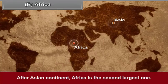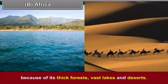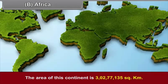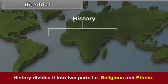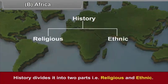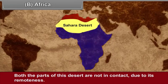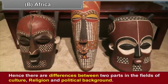Africa is the second largest continent. The African continent was known as the unknown continent during the 18th century because of its thick forests, vast lakes and deserts. The area of this continent is 3,277,135 square kilometers. History divides it into two parts — religious and ethnic — due to the Sahara Desert. Both parts are not in contact due to its remoteness, resulting in differences in culture, religion and political background.